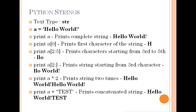When you print a, the output is 'Hello World'. You can also index into a string. For example, a[0] gives you the first character of 'Hello World', which is 'H'. If you print a[1], it displays the second character.